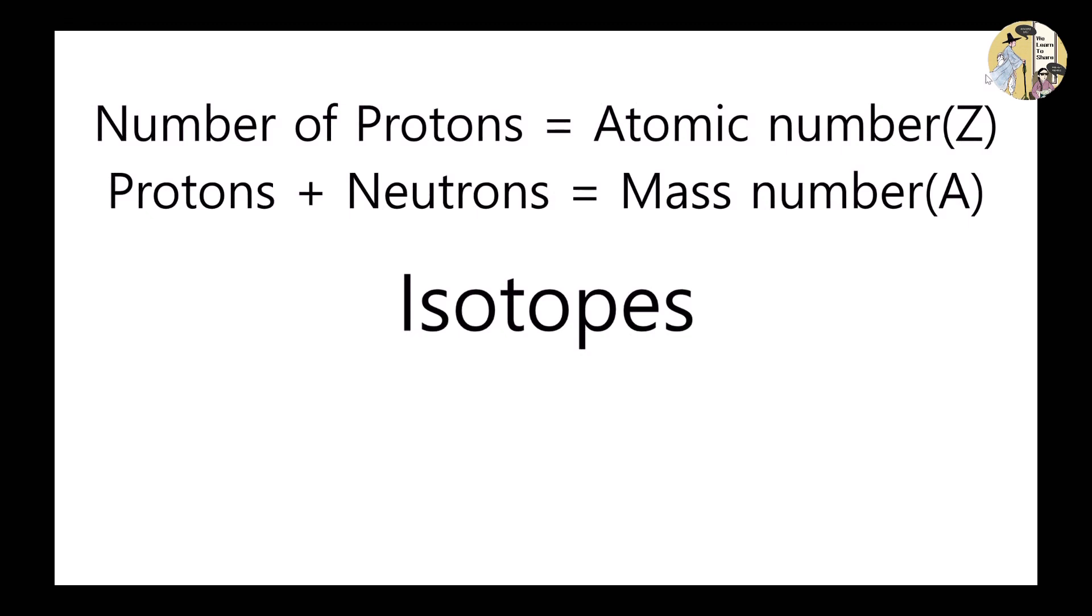For example, let's look at the isotopes of hydrogen. Element hydrogen has just one proton and no neutrons, so its mass number is 1. Deuterium has one proton and one neutron, so its mass number is 2. Tritium has one proton and two neutrons, so its mass number is 3.